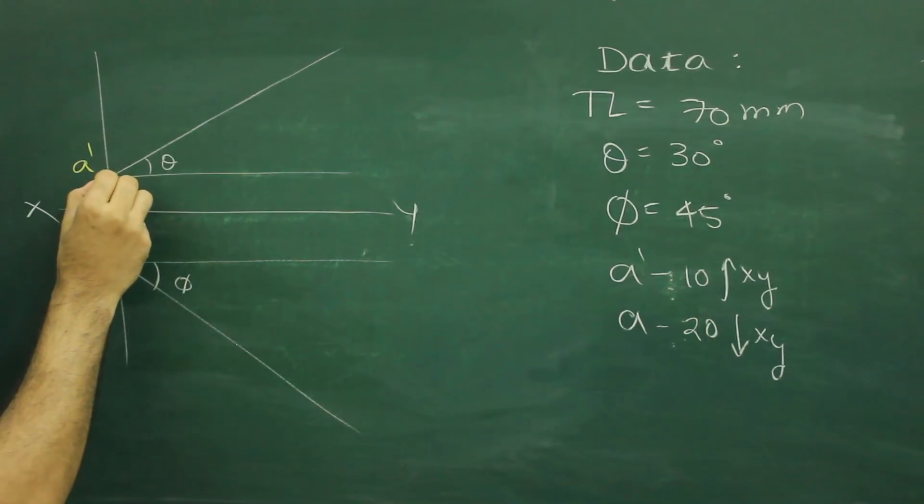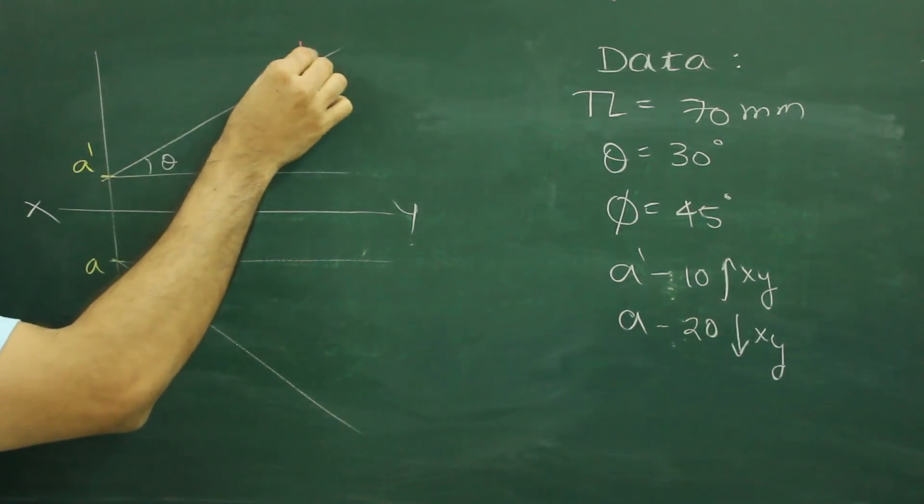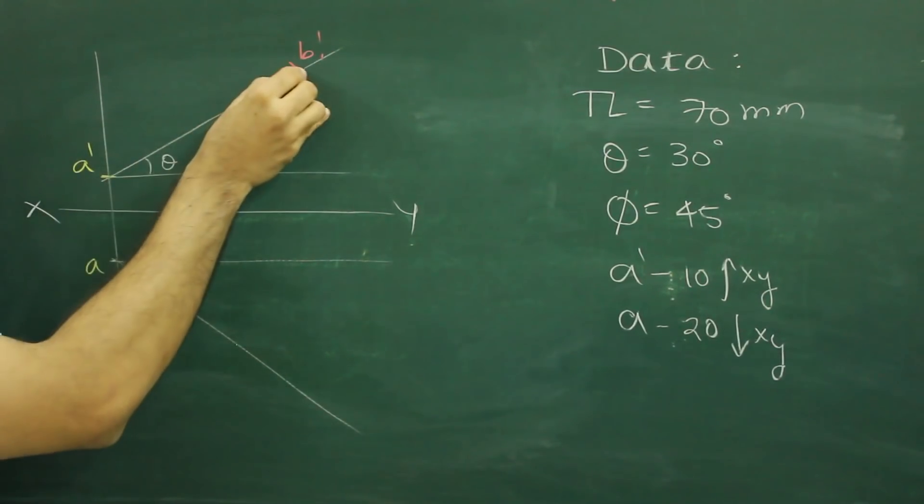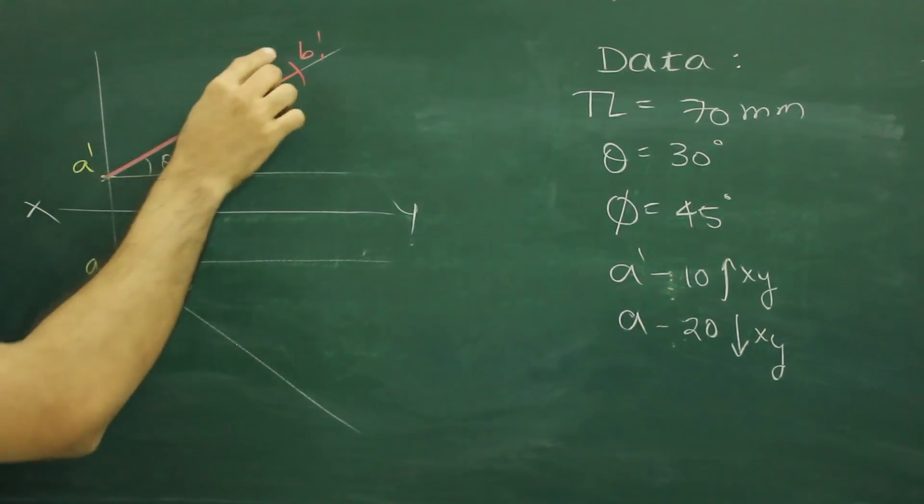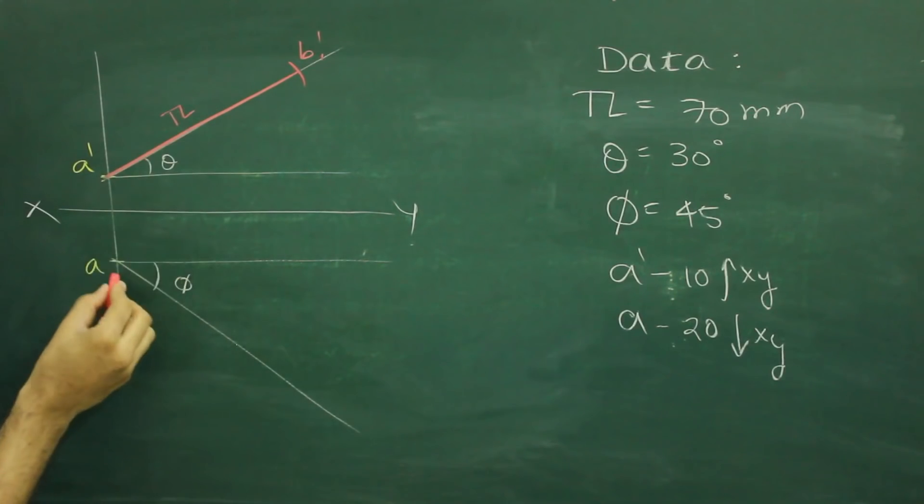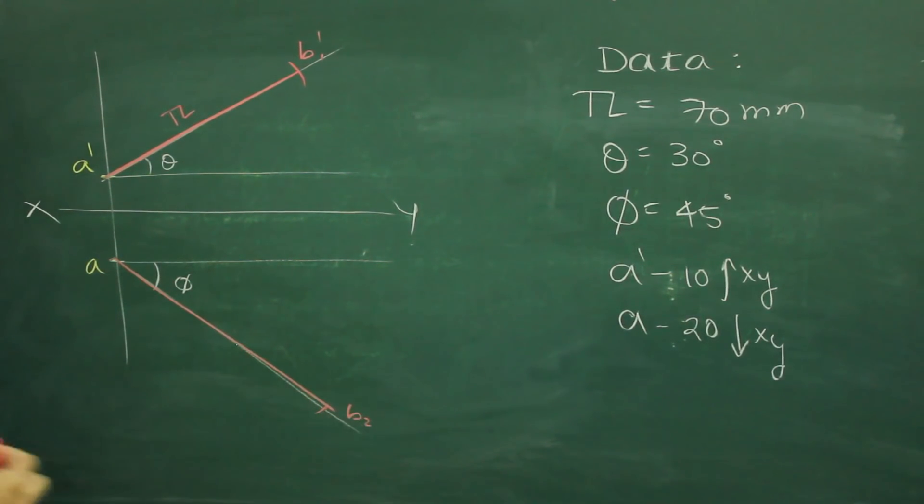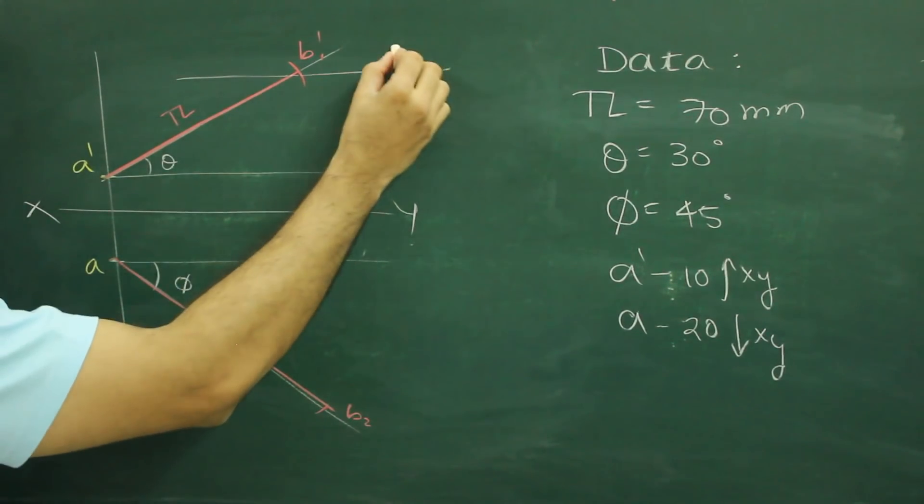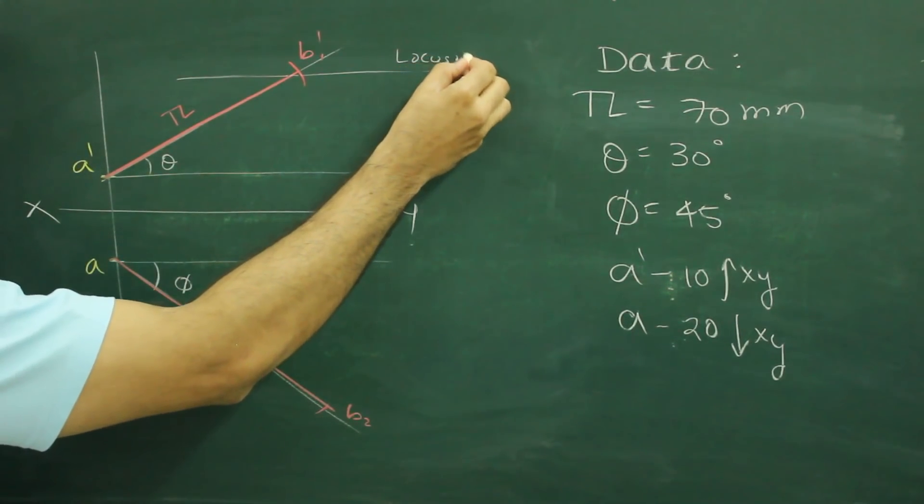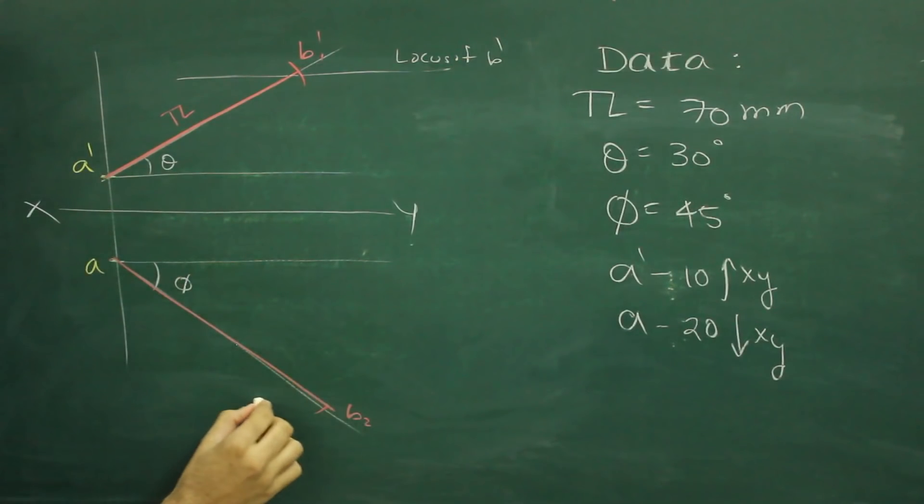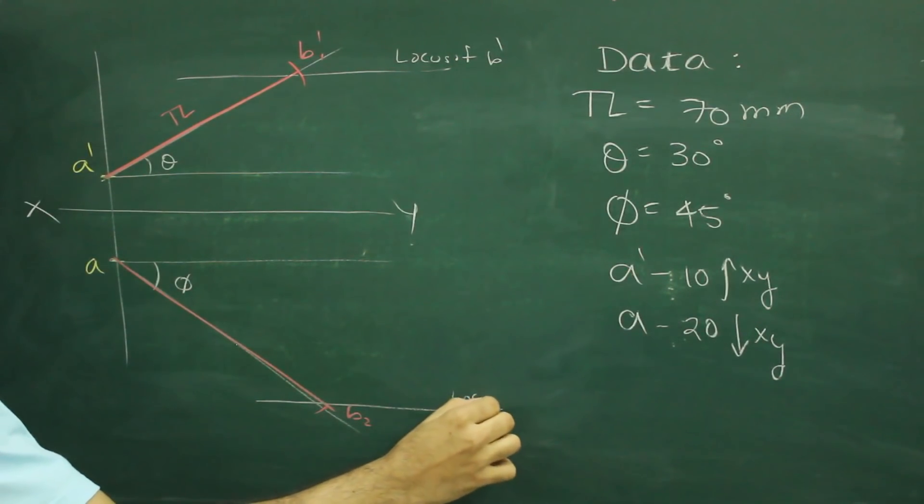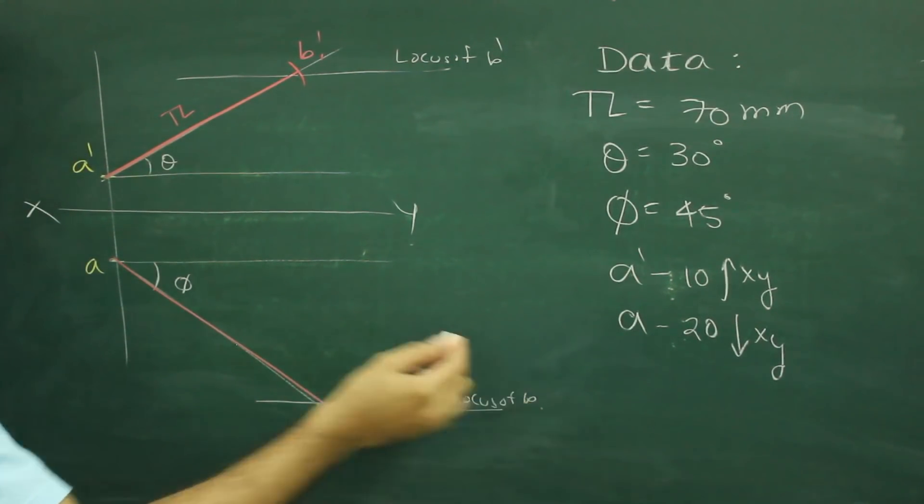True length is 70, so that we can cut on this b1 dash. So a dash to b1 dash is true length and we will cut now. A to b2 is also true length. Then we will draw locus of b dash and locus of b.